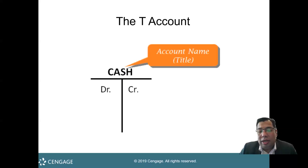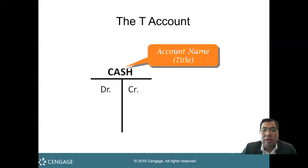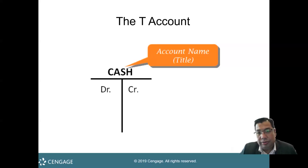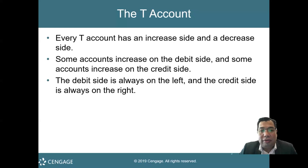On the top of the accounts, we put the title of the account. For example, cash — so on the top we write cash, meaning this T-account is referring to the cash account. If you have another account, inventories, we put inventories. If you have a liability, for example loan, the title will be loan. Every T-account has an increased side and a decreased side, and it depends on the types of accounts.